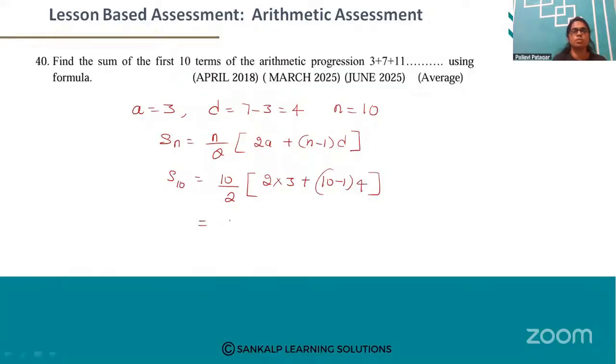This is equal to 5 into, 2 times 3 is 6, plus 10 minus 1 is 9. 9 times 4 is 36.